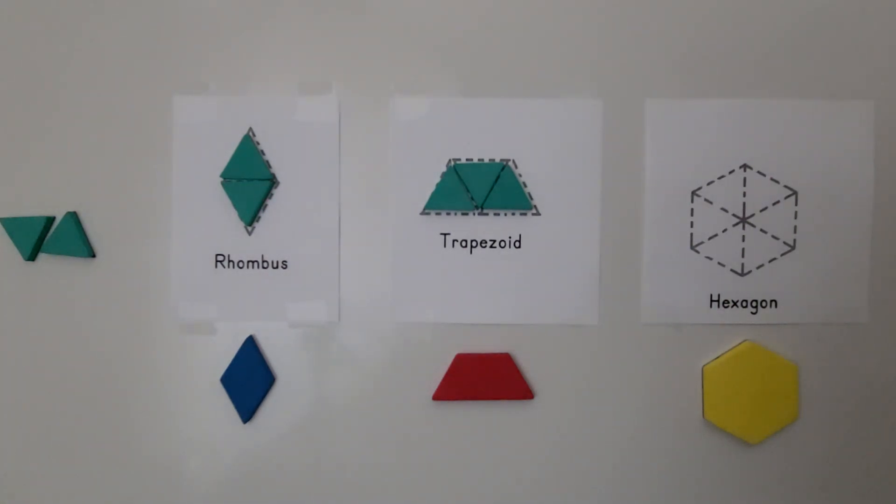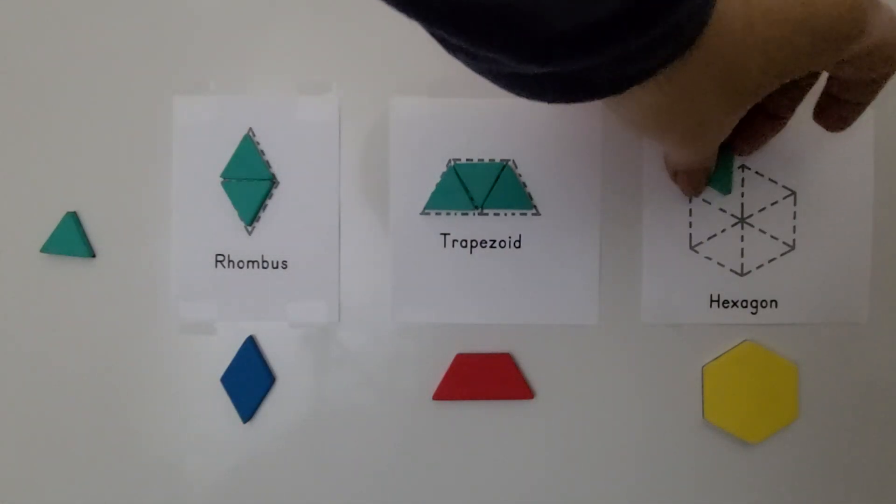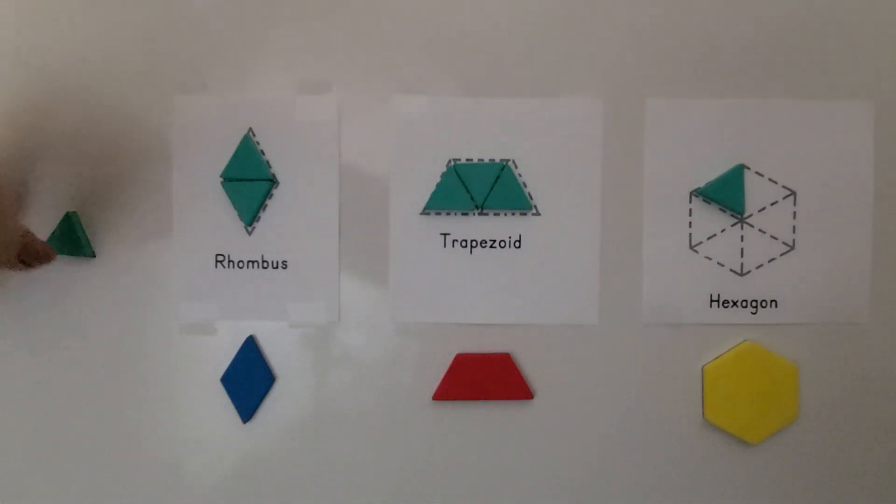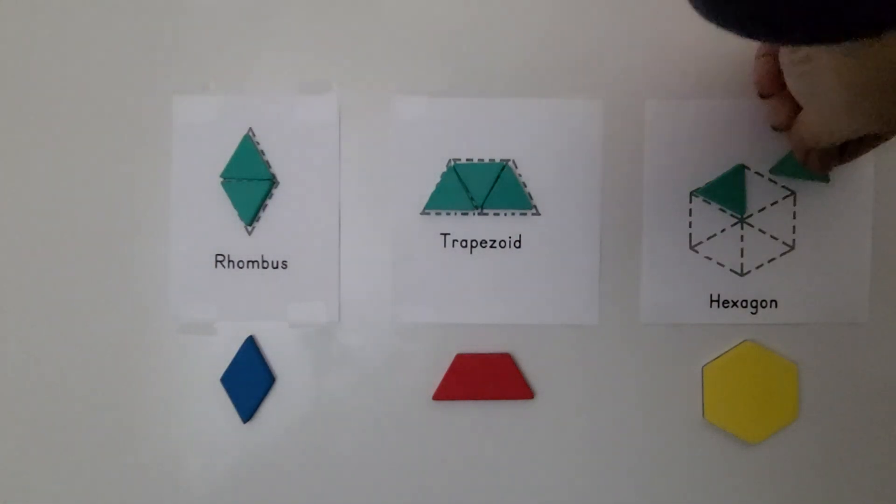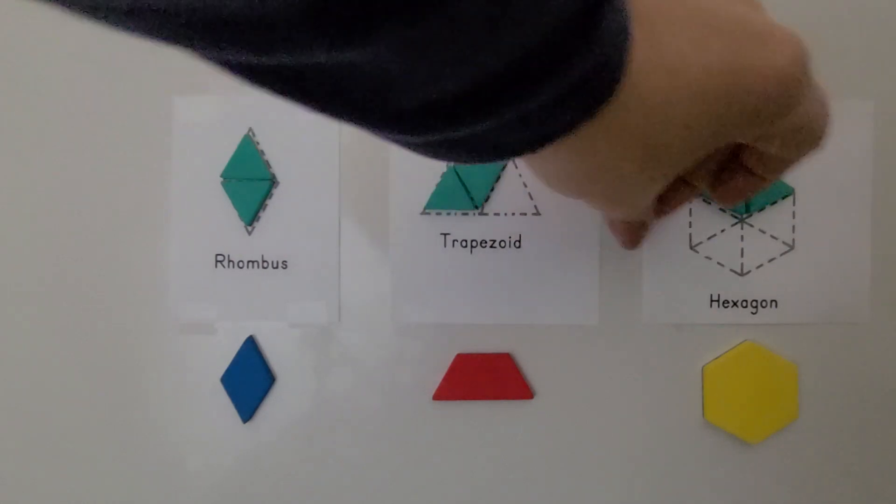And we can take six triangles, and we can make a hexagon. And we've got one, two, and borrow these.